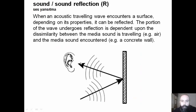Sound reflection. When an acoustic traveling wave encounters a surface of the building product, depending on its properties, it can be reflected back. The portion of the wave that undergoes reflection is dependent upon the dissimilarity between the media sound is traveling, like the air, and the media sound encountered, like the building product.